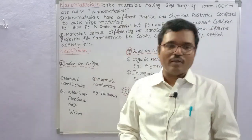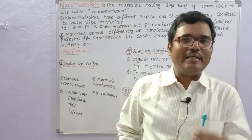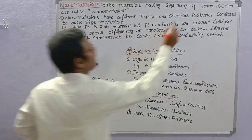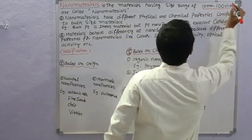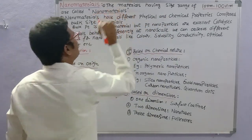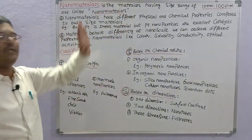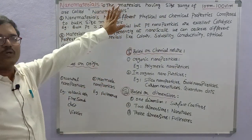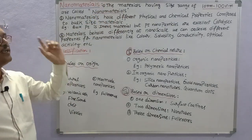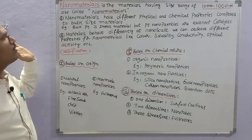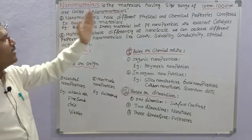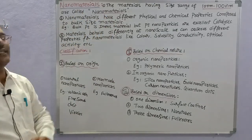Nanomaterials are materials with a size range of 10 nanometers to 100 nanometers. The materials having a size of 10 nanometers to 100 nanometers range is called nanomaterials.